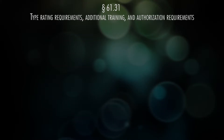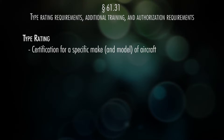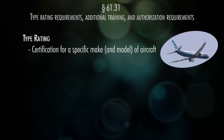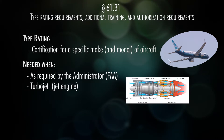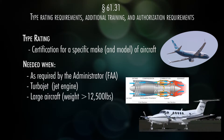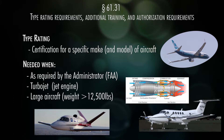Part 61.31 talks about type rating requirements and additional training requirements. A type rating is a certification for the make and sometimes model of the airplane — for example, a Boeing 737 type rating allows you to fly a 737. You need it for three reasons: one, the FAA says so; two, it's a turbojet or turbine engine; or three, it's a large aircraft over 12,500 pounds. So if you wanted to fly the Cirrus Vision Jet, you'd need a type rating because it's a jet.